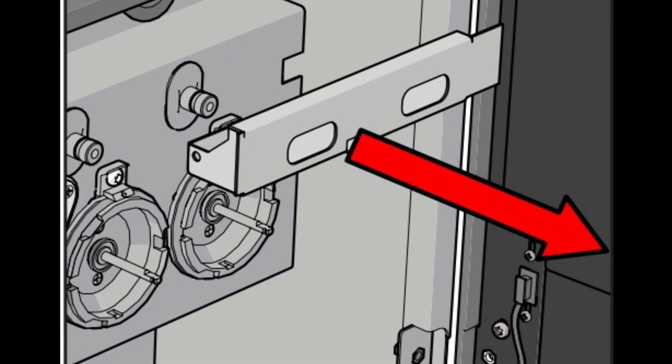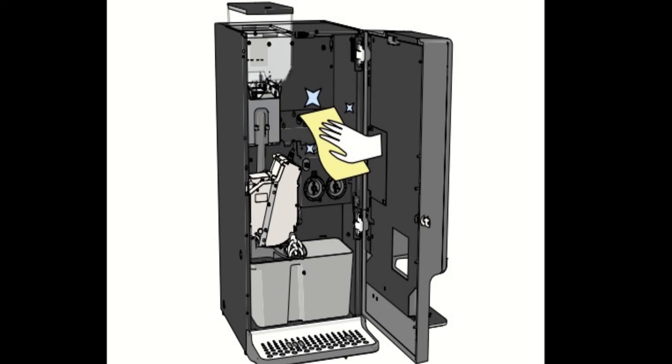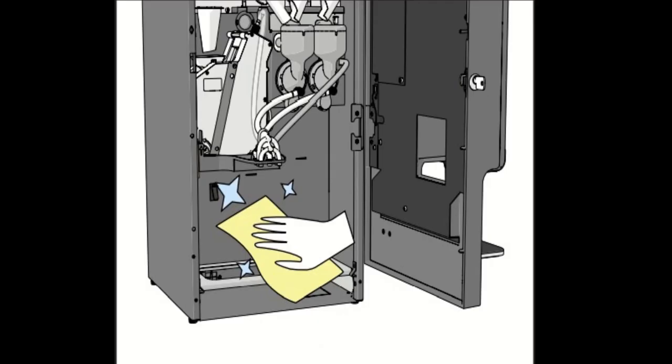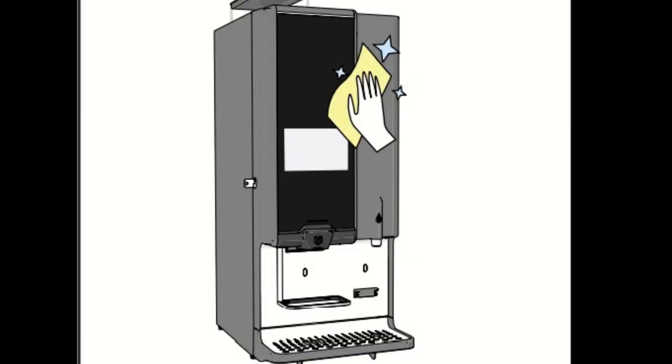Remove the suction tray from the machine. Clean the tray and replace filter if necessary. Clean the interior of the machine with a slightly damp cloth. Replace all parts in reverse order. Once all parts are cleaned and returned to their position, do the cleaning cycle.